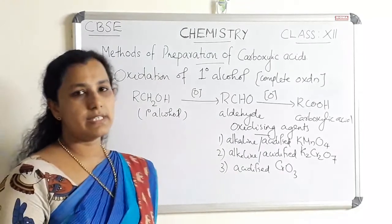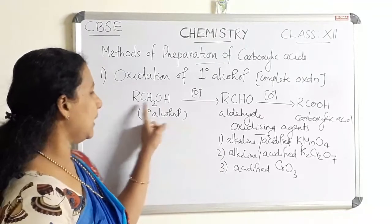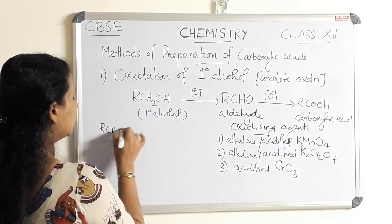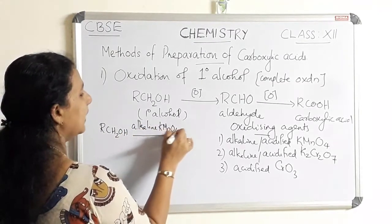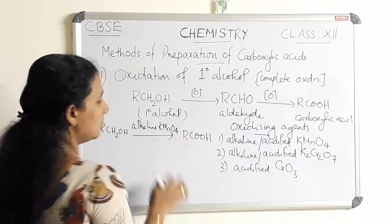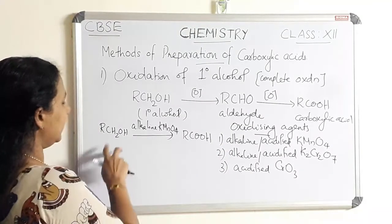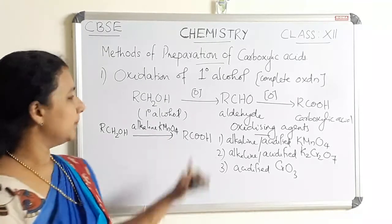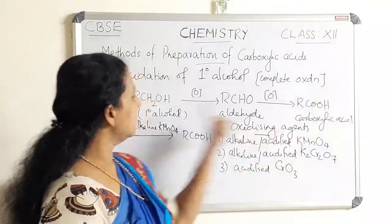These are all strong oxidizing agents. Any one of these can be used for the oxidation of primary alcohol to carboxylic acid. We can write: RCH2OH with alkaline KMnO4 on the arrow — since alkaline KMnO4 is a strong oxidizing agent, the product will be RCOOH. We don't need to write the aldehyde intermediate; the end product is carboxylic acid. Primary alcohol on oxidation in the presence of alkaline KMnO4 gives carboxylic acid.